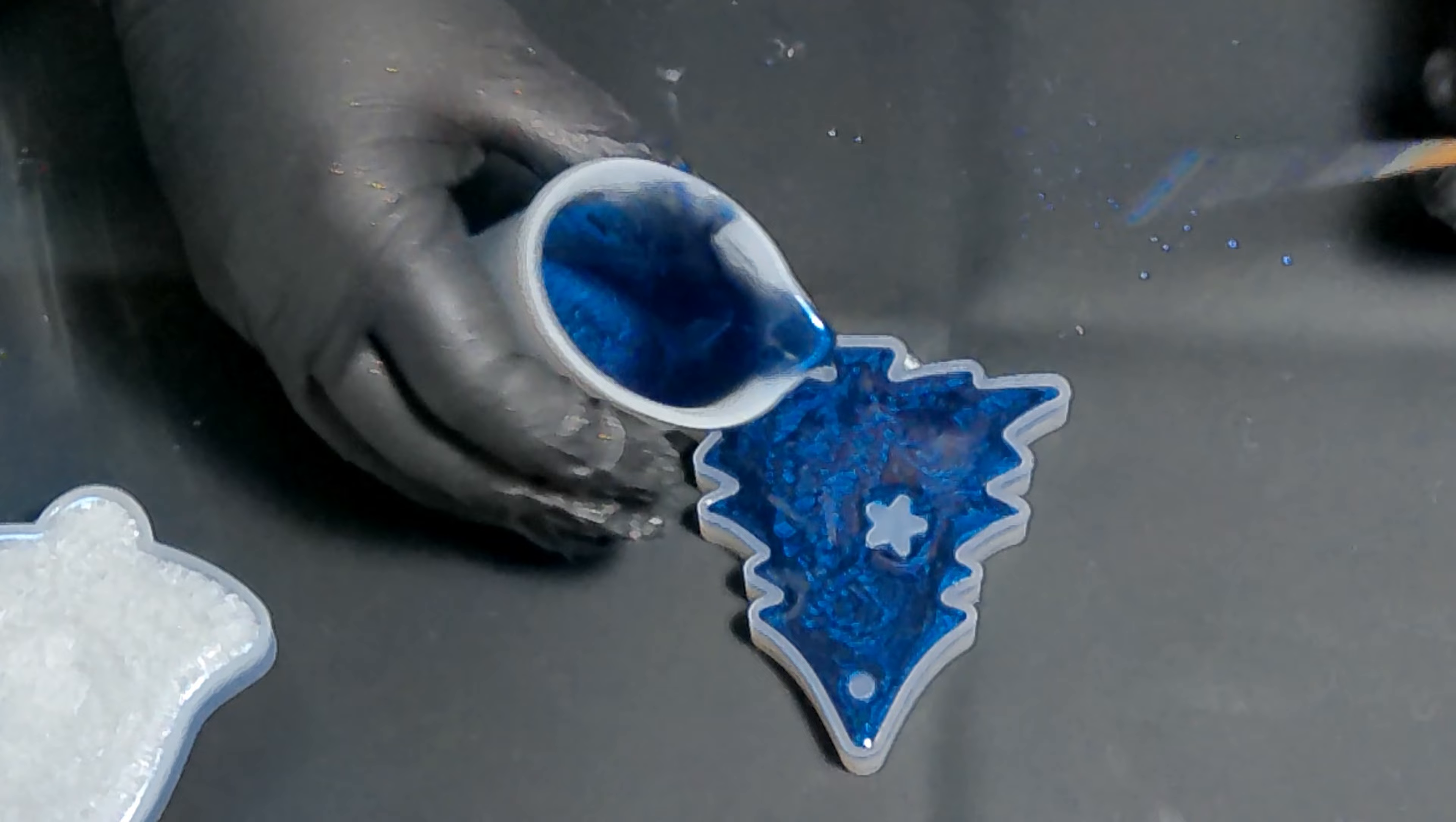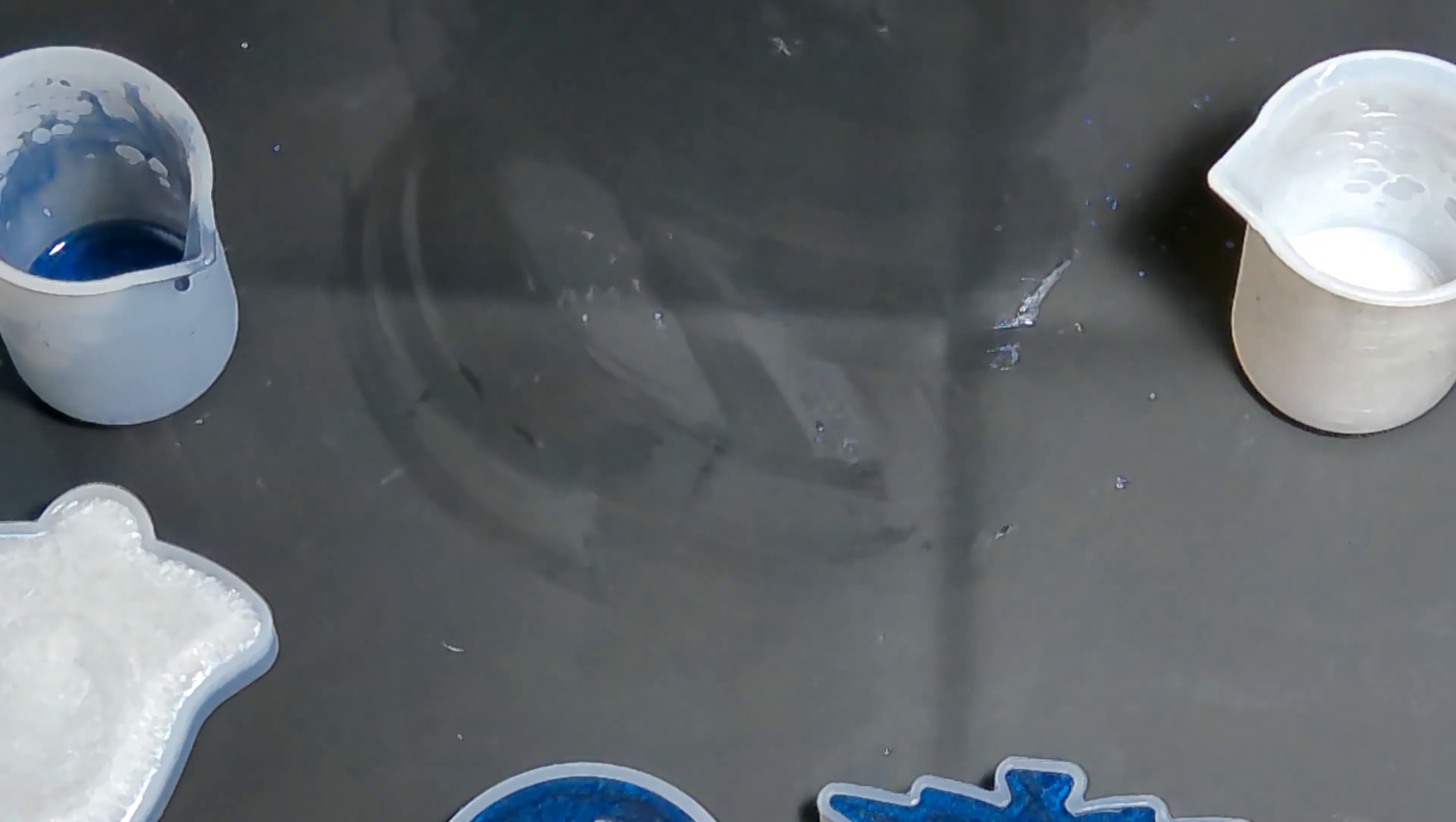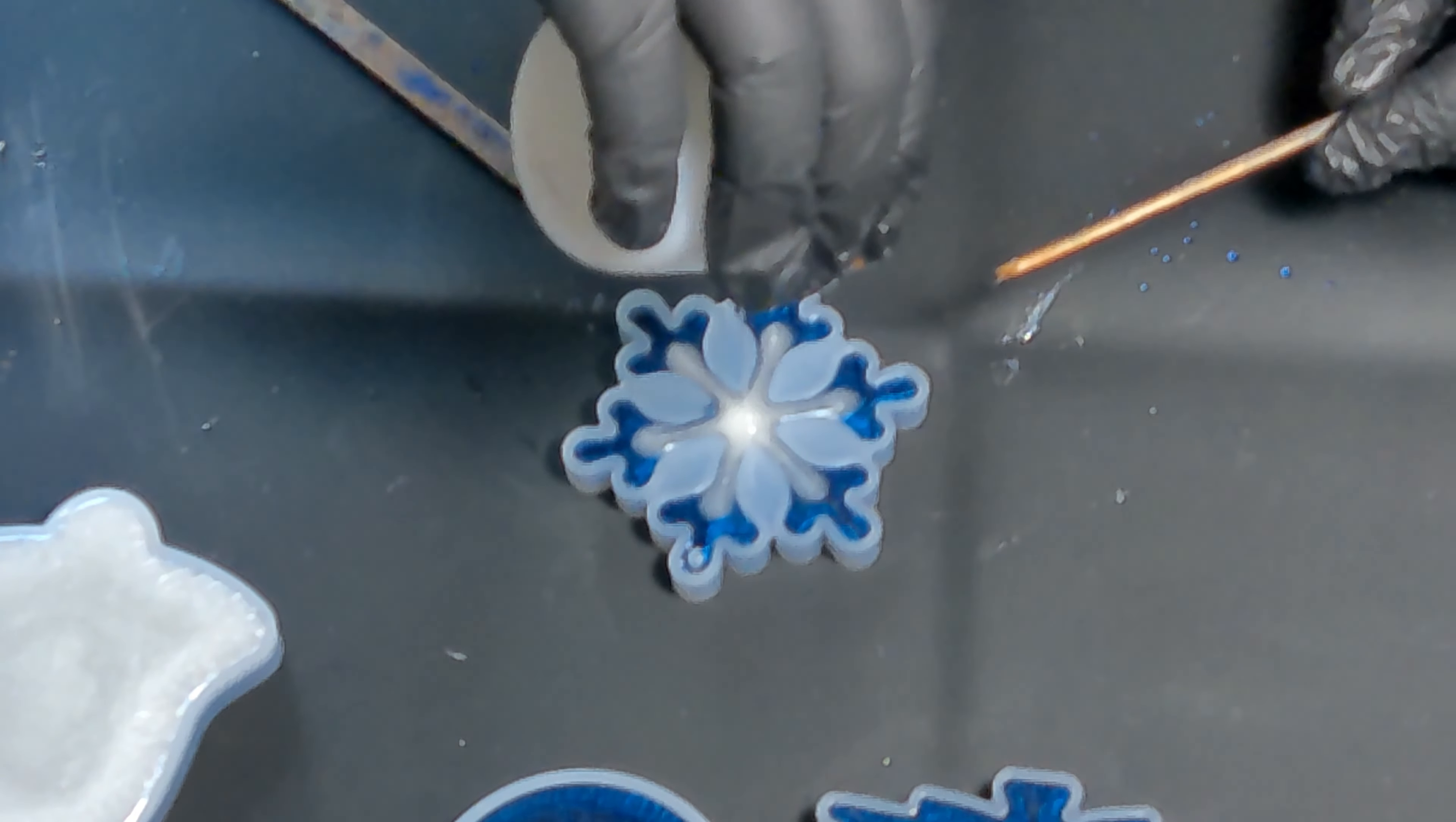Now I'm just using up the rest of my resin that I had poured so I don't waste it. I'm going to do this like a swirly type pattern, just going around with a popsicle stick and swirling the colors together. With the rest of it, I'm going to make a snowflake. I'm just pouring the blue in now, using up the rest of it, and then I'm going to take the rest of the white that I have left and just dump it straight in the middle. It's going to cause a really cool effect when I demold it the next day.